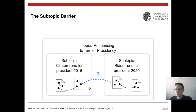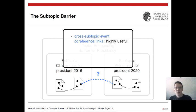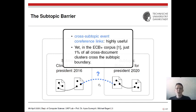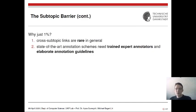This is what we call a cross-subtopic event coreference link, which is highly useful. But the big problem is that in the ECB+ corpus — the largest corpus for this task — only one percent of all cross-document event coreference links are of this type. So currently we have nearly no data on this phenomenon; we cannot train or test systems on it at all.